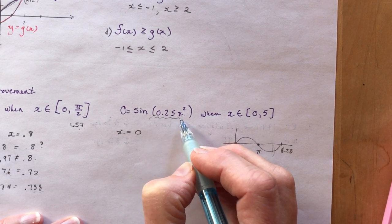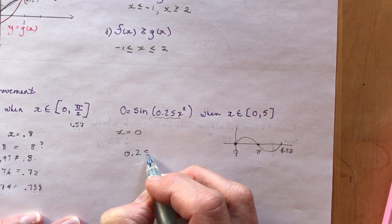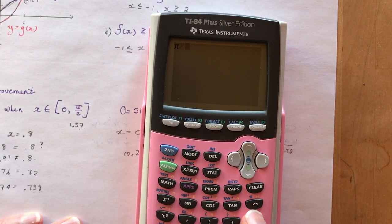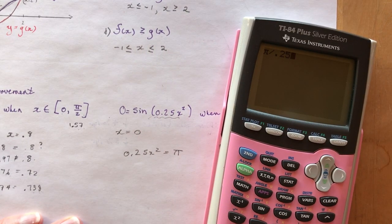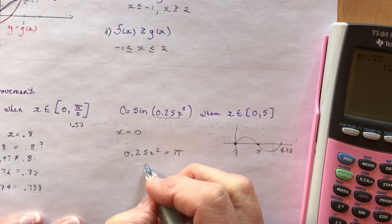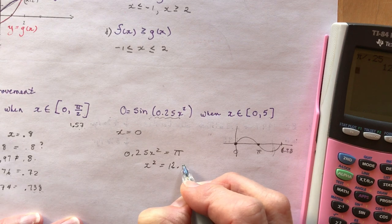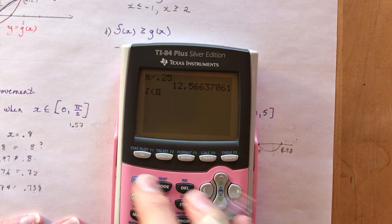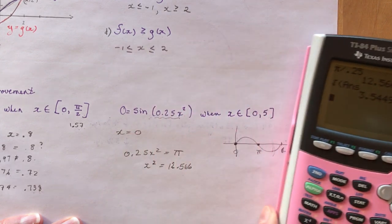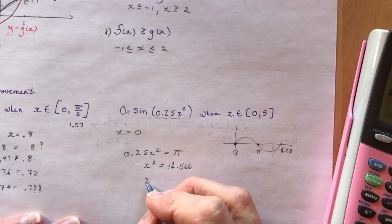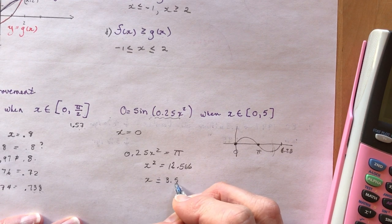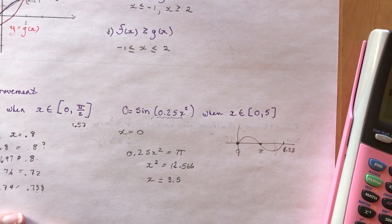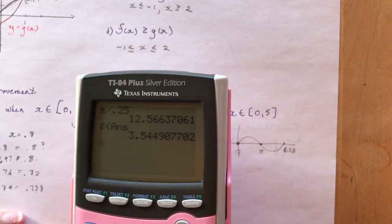I want 0.25x² to equal π. So x² = π / 0.25, which gives x² = 12.566. Taking the square root gives x = 3.544, which rounds to 3.5 to one decimal place. If you substitute 3.5 back in, it comes out very close to 0.